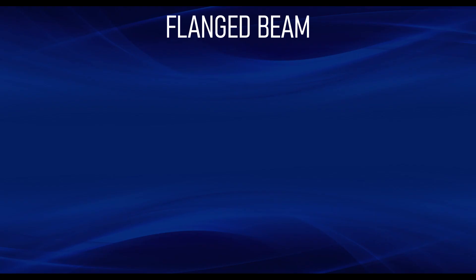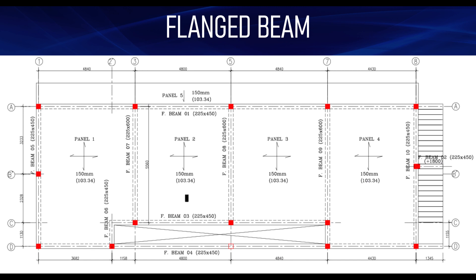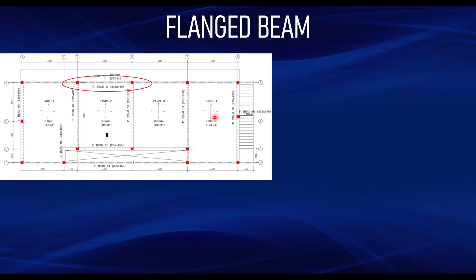Let's take an example. We have a general arrangement — a floor plan with a structural layout showing slab panels, where the slab thickness is 150mm. We want to design beam FB1, which has a size of 225 by 450mm. We want to determine the effective width of this beam between grid lines 3 and 5. This is actually a continuous beam that starts from grid line 1 and ends at grid line 8.